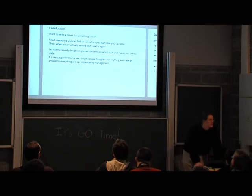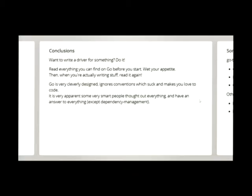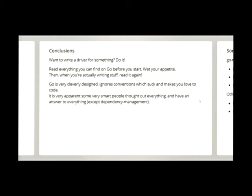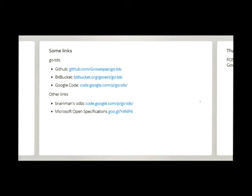I've heard some people say don't use 'go' in your project name either, though I had less of a problem with that since it's basically a bridge between Go and TDS. If you want to write a driver for something, just go do it. Read a lot of stuff before you start writing — then when you're actually writing, read the stuff that makes you enthusiastic about the language again, because you can often forget really awesome things you can actually use. Some links: Raymond's ODBC driver, and if you want to look at open specifications there are a lot of PDF files — find them on that short link. Thank you very much.